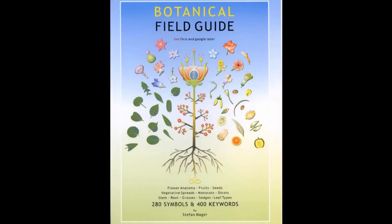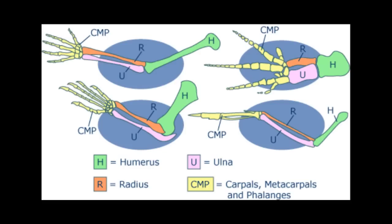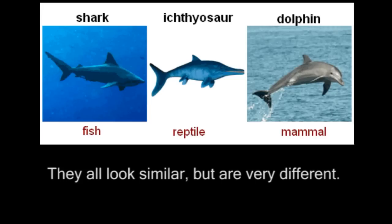Now that we've seen how embryology points strongly to evolution, let's look at a completely different field: comparative anatomy. Evolution predicts that structures will change over time as life progresses. As such, we should expect to find specific similarities in the bodies of organisms which share a common ancestor. It's very important to note that a similarity alone is not enough — we have to find a distinct pattern of similarities and differences where needed.